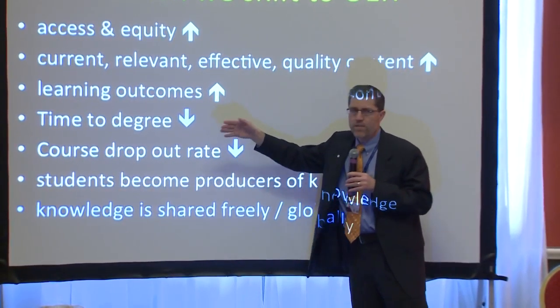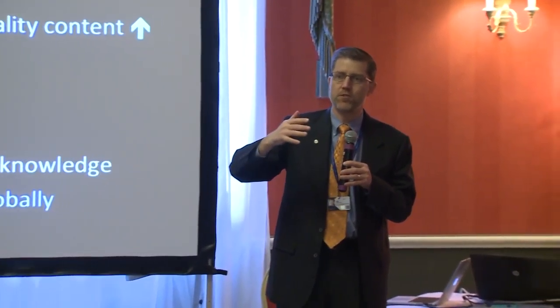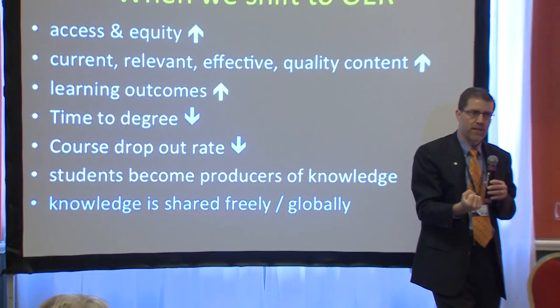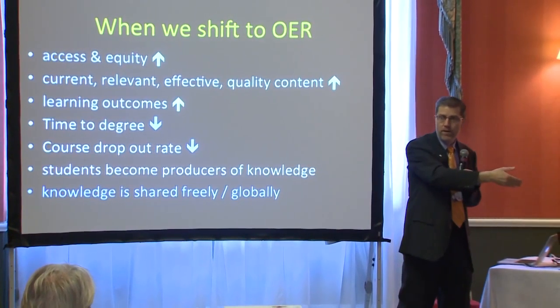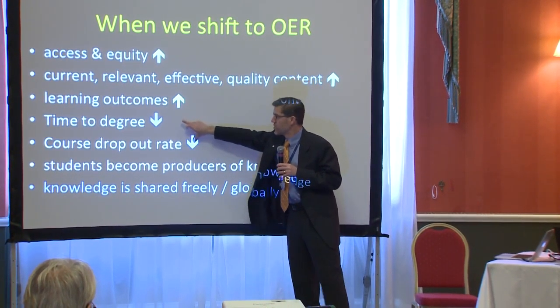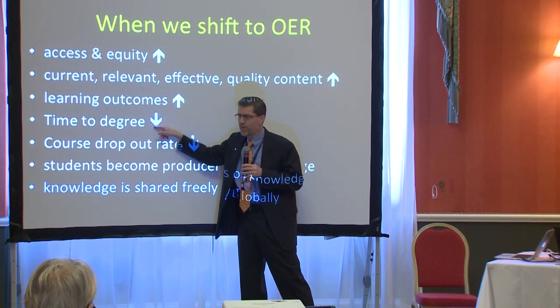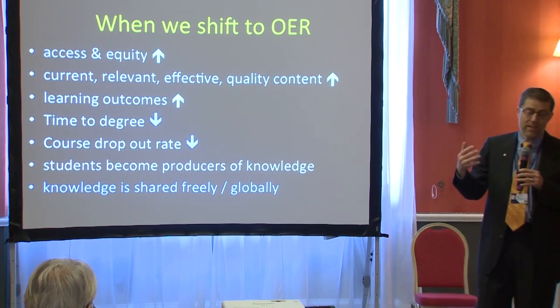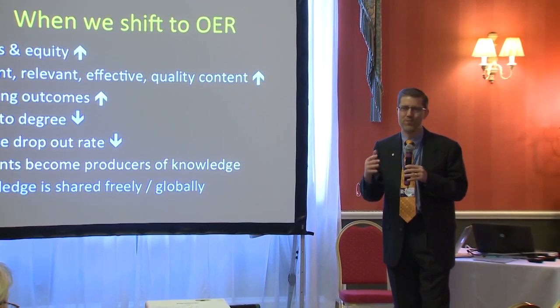Interesting things happen here as well. The time to degree drops. We all want students to graduate in as short a time period as possible — we want them to get their degrees, their certificates, get out into the workforce, and contribute to the economy and society. When students have equitable access to resources, they have what they need to be successful, get the credits, and move on. Course dropout rates also fall — on average approximately 15%. That doesn't sound like a lot, but it is a lot. 15% of your students are tipping-point numbers. That's a big deal.